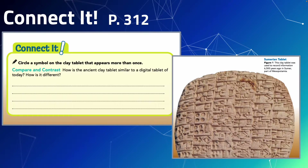Think about what we've been talking about in class — how information is recorded and computed digitally, how we use a series of ones and zeros with repeating patterns. If you look at this tablet, ask yourself: are you noticing a pattern? Circle a symbol on the clay tablet on page 313 that appears more than once. One definitely stands out right away, but there are a couple when you look more closely.